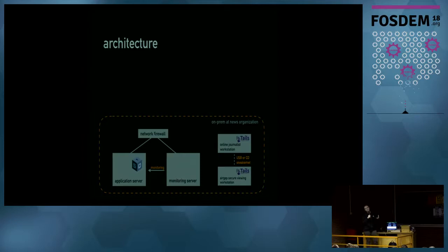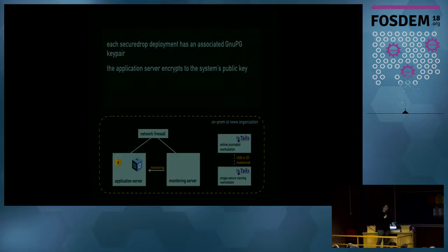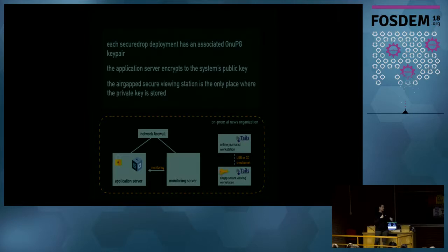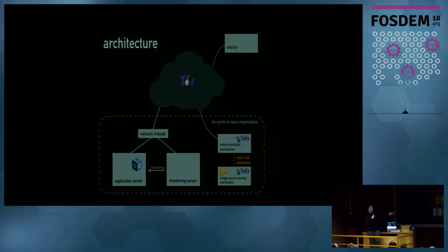Each deployment has an associated GPG key pair. The application server takes submissions and encrypts them to the system's public key, so everything on disk is encrypted. The only place where the private key to decrypt these submissions is stored is on that air-gapped workstation. Everything is connected via Tor Onion services, and sources connect to an organization's SecureDrop using Tor Onion services only.